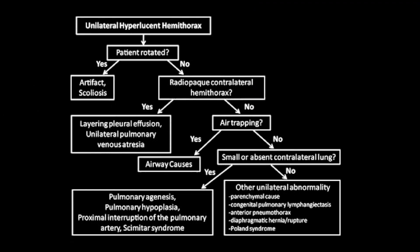The differential for unilateral hyperlucent hemithorax is broad on radiography. Consider patient rotation, as well as the density and size of the contralateral hemithorax and lung.